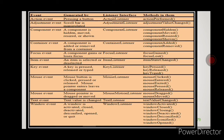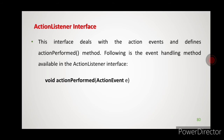Here is a table listing several event listener interfaces. The first column contains the event name, the second shows when it is generated, the third shows the corresponding event listener interface, and the fourth shows the methods that interface requires to be implemented. The first one is action event — it is generated when we press or click a button, the corresponding interface is action listener, and the method to implement is action performed.